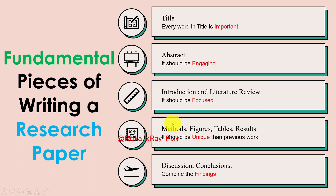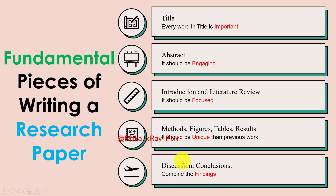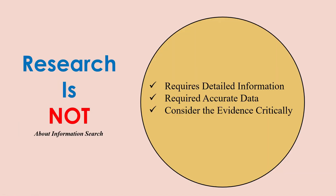The method section includes what you did, how you did it, where you obtained the material, and how you achieved your objective. It should be unique compared to previous work to prevent plagiarism. The discussion and conclusion section includes your findings. In the discussion, we combine results and discuss hypothesis validation. The conclusion sums up the main findings of your research paper.